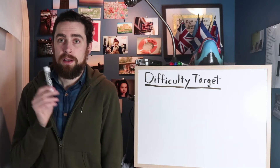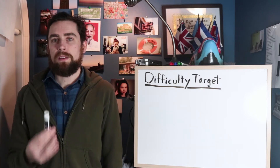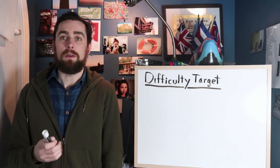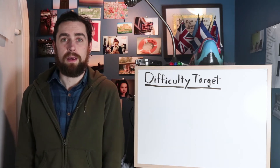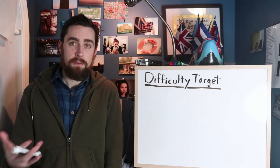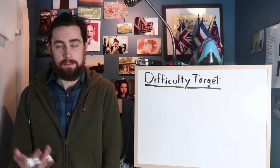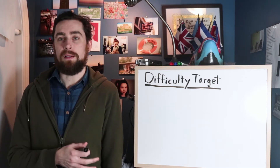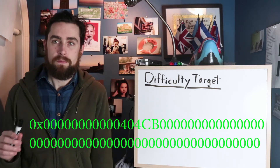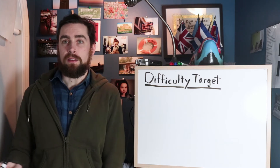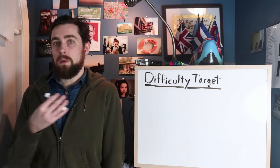The answer is the difficulty retargeting that the Bitcoin protocol goes through. In every single Bitcoin block there's a value known as the difficulty. This value determines how difficult the cryptographic puzzle being solved is — the more difficult it is, the more processing power it takes to solve within a reasonable amount of time, i.e., 10 minutes. This value can be represented as a decimal value or a hexadecimal value. I have another video that goes into more detail about how this cryptographic puzzle works — the link is in the description.